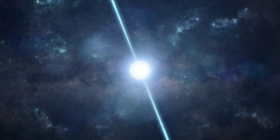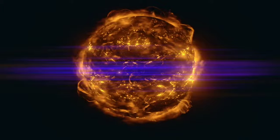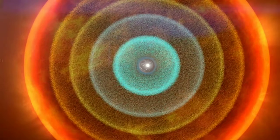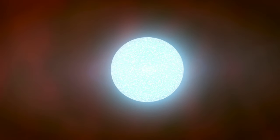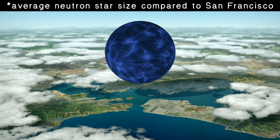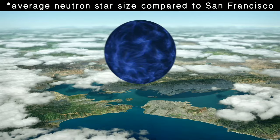Pulsars are the leftover scraps after massive stars, at least four times the sun's size, burn out and explode in supernova. This epic fireworks show blasts away the outer layers, leaving behind a super-dense core called a neutron star. Imagine squeezing a sun-sized star into a city-sized ball. That's the mind-boggling density we're talking about.